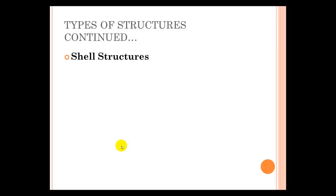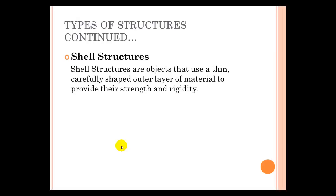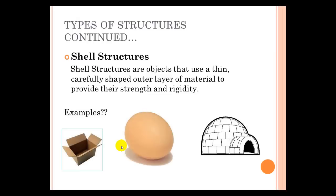I said we were only going to talk about two, but we're going to talk about a third as well, and these are shell structures. Shell structures are objects that use a thin and carefully shaped outer layer of material to provide strength and rigidity.